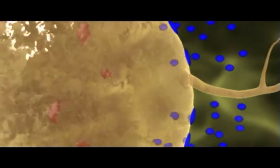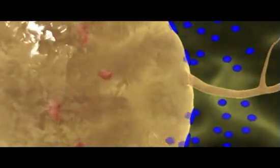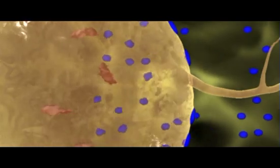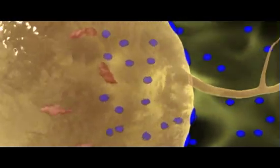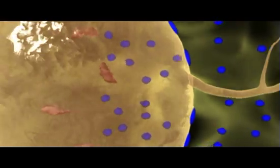But since opposite charges attract, as potassium ions diffuse out, an electrical force develops that tends to pull them back inside. At some point, the diffusion of potassium ions out of the neuron due to concentration differences is balanced by the electrical attraction tending to pull them back inside.